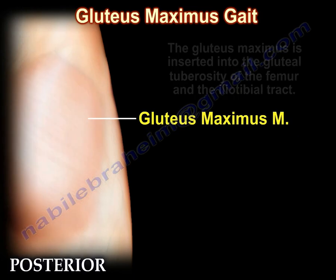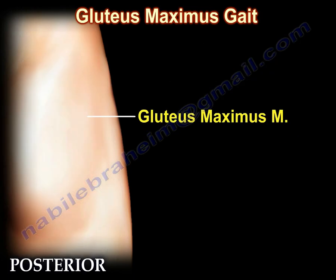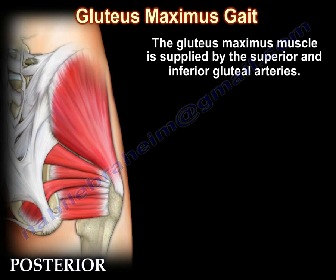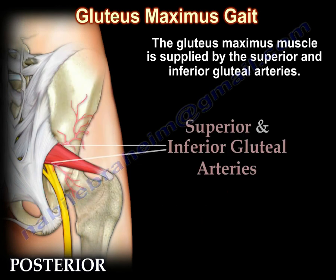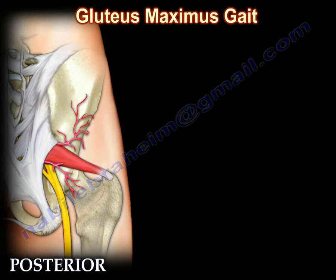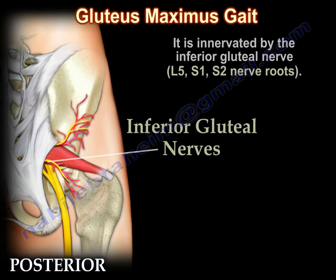The gluteus maximus muscle is supplied by the superior and inferior gluteal arteries. It gets its innervation from the inferior gluteal nerve.